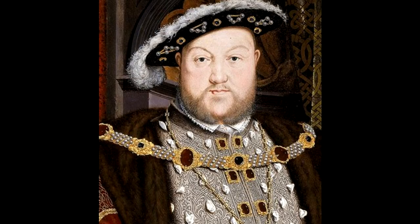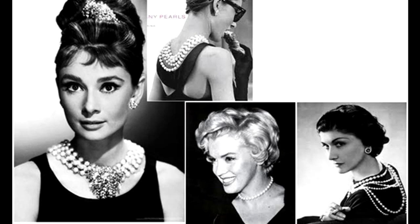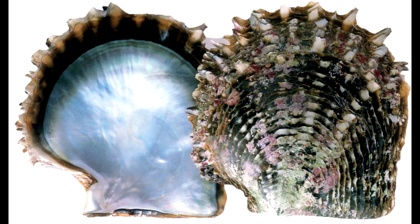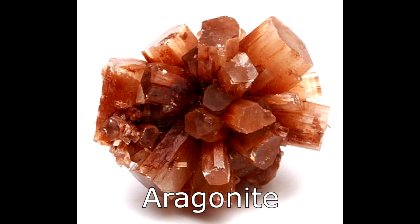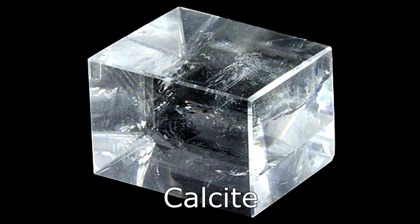We have used pearls in our history for adornment and jewellery for quite a long time. Pearls are a natural organic material produced by mollusks. These mollusks are made up of calcium carbonate, and the two main minerals are aragonite and calcite.